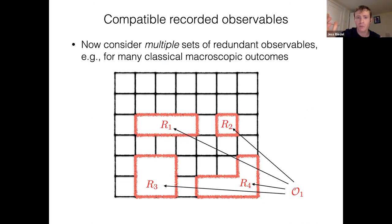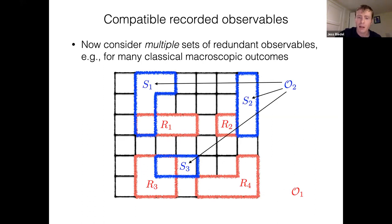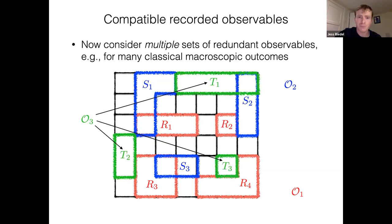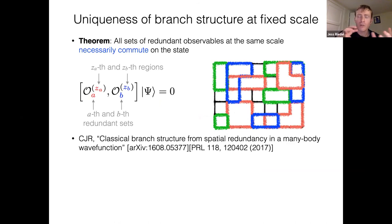Now I want you to think about multiple sets of redundant observables — in fact, all possible sets of redundant observables. You just exhaustively find all possible sets of redundant observables that exist. Maybe the red redundant observable corresponds to the outcome of some Stern-Gerlach experiment with many records scattered all over the place. Maybe the blue records correspond to something else, like the configuration of your double pendulum. Here is the main result: if you consider all possible sets of redundant observables at the same scale, they necessarily commute when acting on the state.